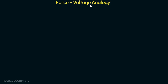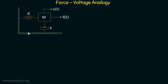And accordingly we will derive the other analogous terms. For that, let us consider a mechanical system in which we have a mass m, which is connected with a spring from one side, and the spring is connected to a fixed support from the other side. There is a friction between the fixed surface and this mass m, which is indicated by the damper having the coefficient of viscous friction equal to b. We are applying a force f on this mass to the right hand side, and due to this there is a displacement x to the right hand side.